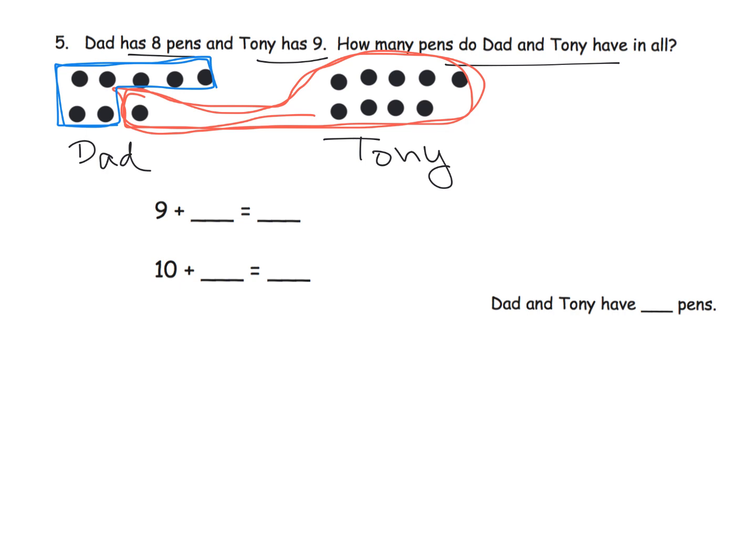Our number sentences will be 9 plus 8. Now notice, parents and teachers, we have 8 on the left, 9 on the right, but all of a sudden they put 9 on the left and 8 on the right. So they're essentially showing us the commutative property. Teachers, feel free to point that out—that 9 plus 8 and 8 plus 9 are the same thing. They equal the same amount.